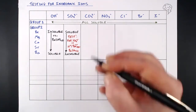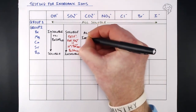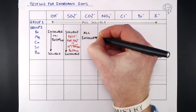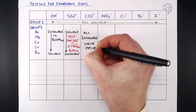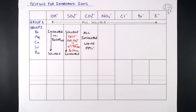Speaking of carbonates — Group 2 carbonates are all insoluble. You will definitely get a white precipitate with any Group 2 ion and a carbonate ion. From beryllium carbonate down to barium carbonate, they're all white precipitates. To remember: hydroxides higher in solubility, sulfates smaller in solubility, carbonates can't dissolve. That's the mnemonic — they can't.